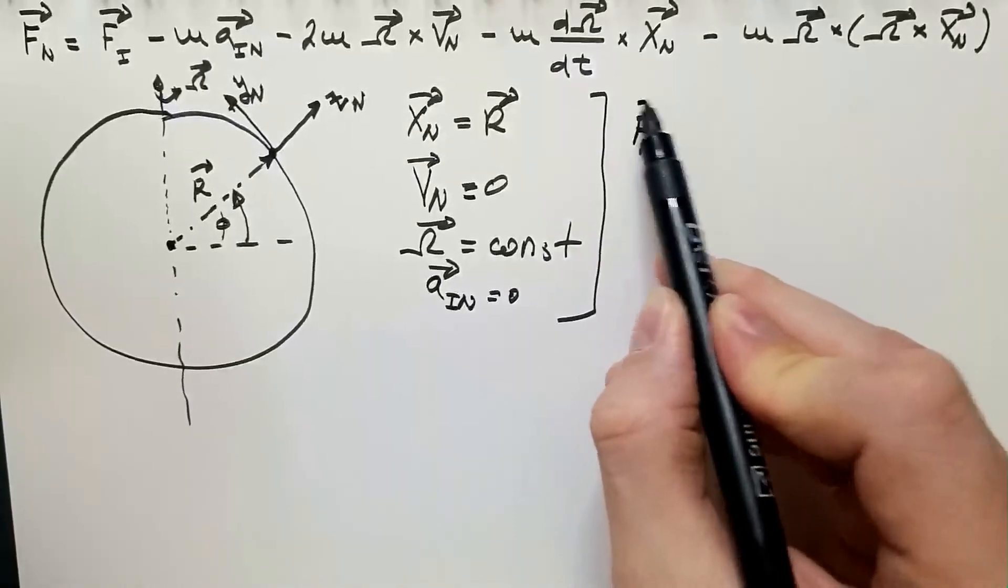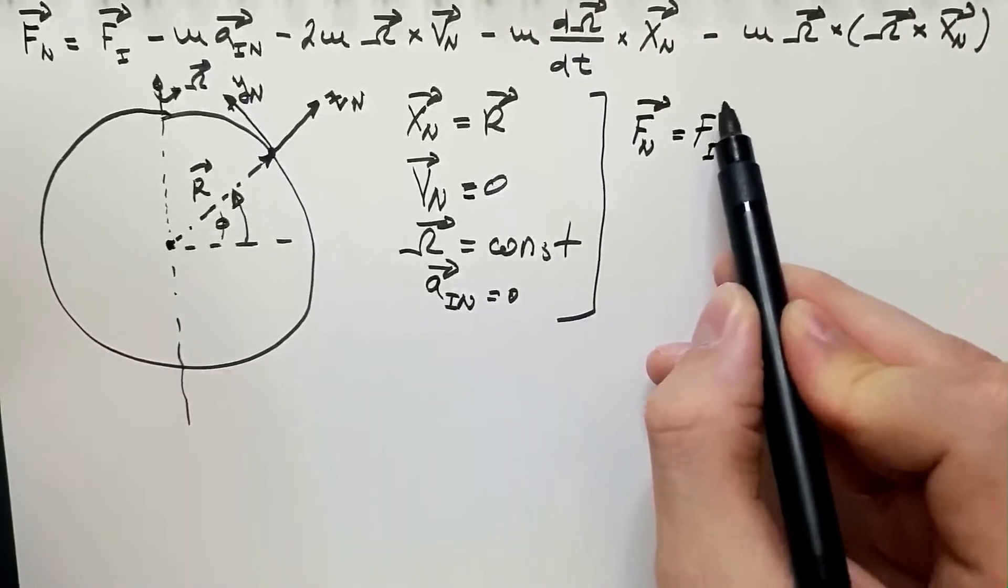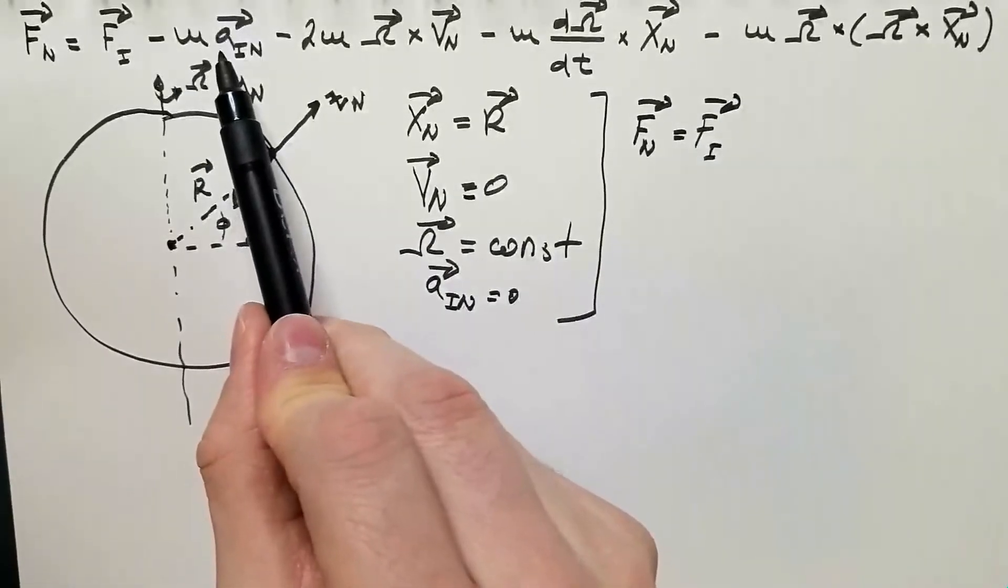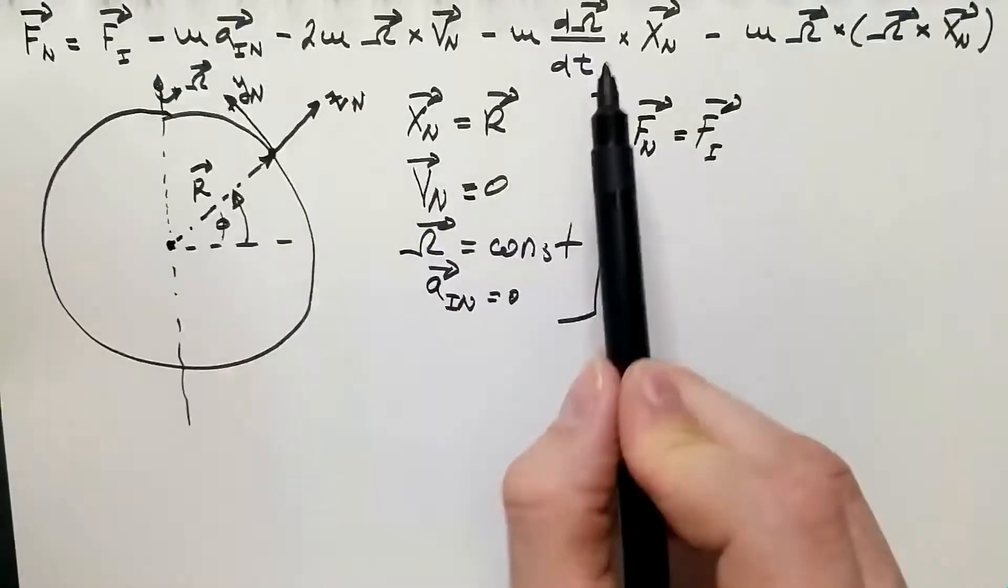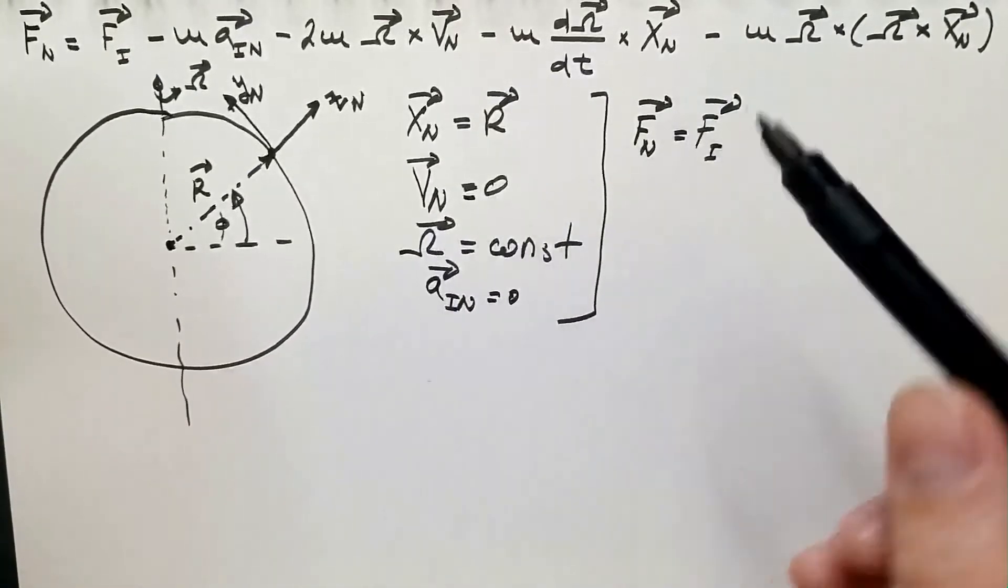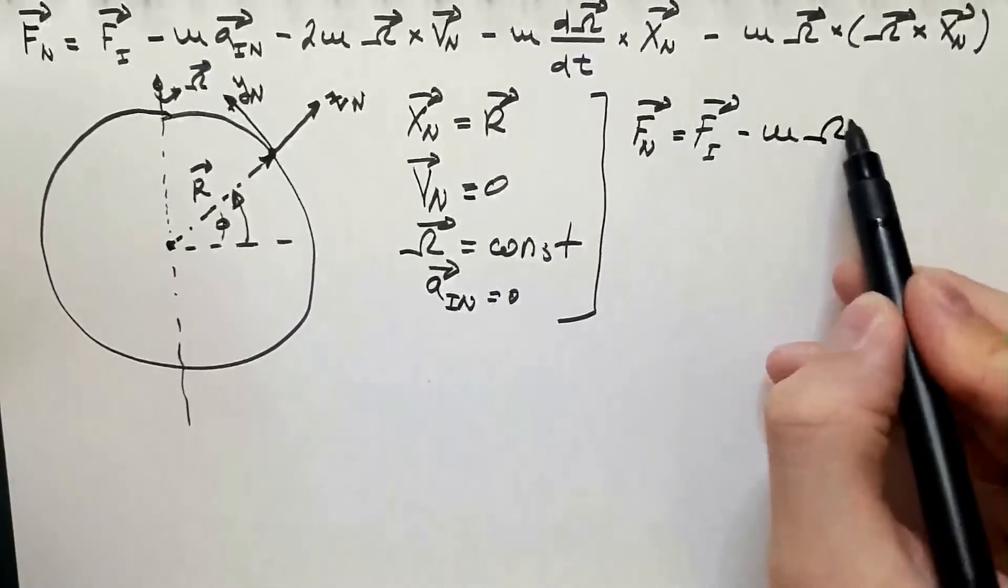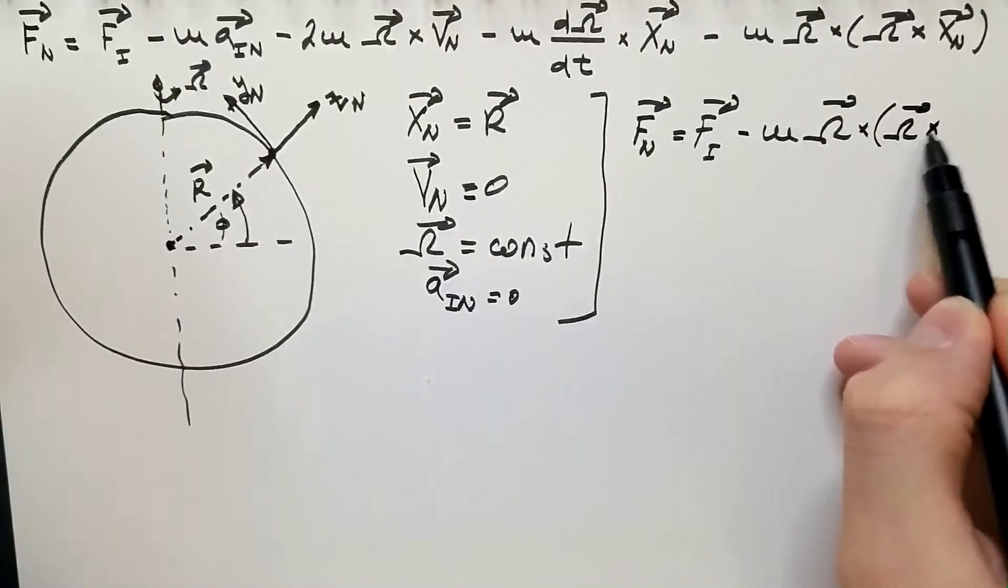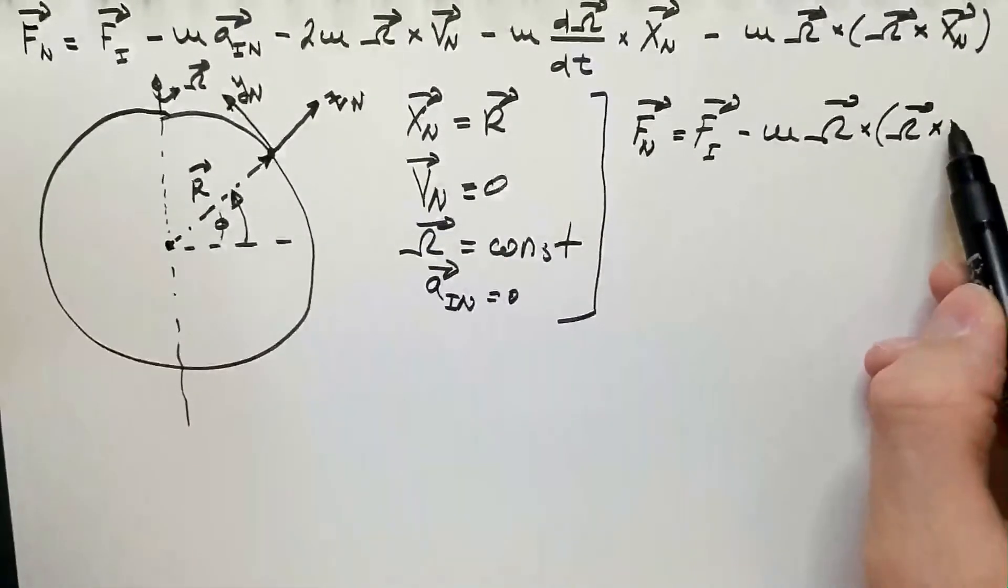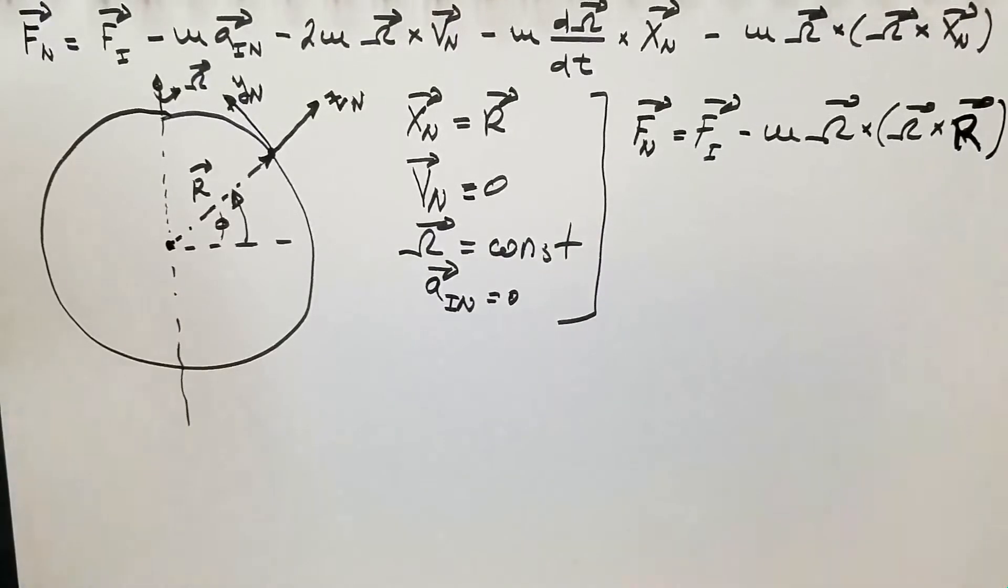Now, equipped with this knowledge, the above equation reduces to: force in non-inertial reference frame is forces in inertial reference frame. This term disappears. This term disappears because v_n is zero. This term disappears because omega is constant. And we are only left with the centrifugal force, m omega cross product omega cross x, but not x_n because x_n is r, so cross r.